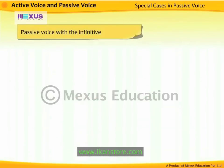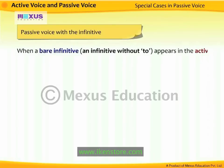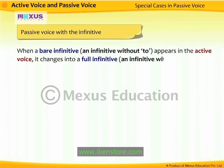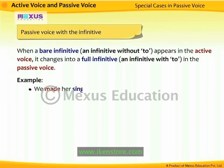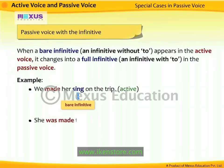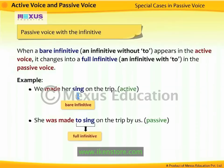Passive voice with the infinitive: when a bare infinitive (an infinitive without 'to') appears in the active voice, it changes to a full infinitive (an infinitive with 'to') in the passive voice. For example, 'We made her sing on the trip' — 'sing' is the bare infinitive. In passive voice it becomes 'She was made to sing on the trip by us.' The bare infinitive 'sing' changes to the full infinitive 'to sing.'